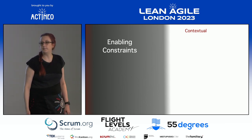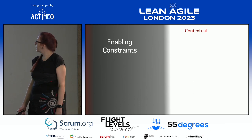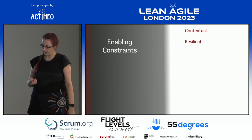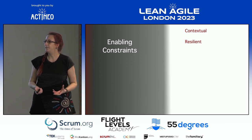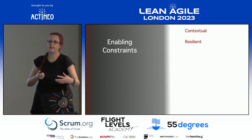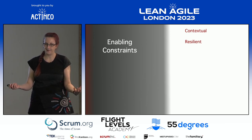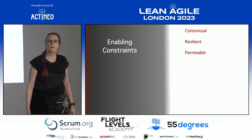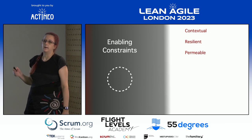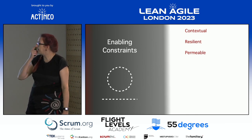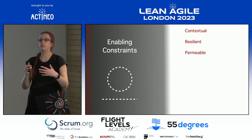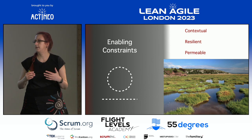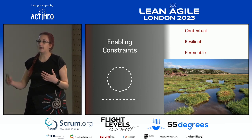An enabling constraint is resilient — it changes its nature without changing its identity. A sea wall is no longer a sea wall when it's got a big hole in it. But a salt marsh is permeable: it gives you some warning when the sea comes in and can absorb it. And it remains a salt marsh when the sea goes out again — it's still a salt marsh.